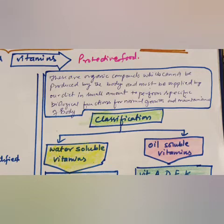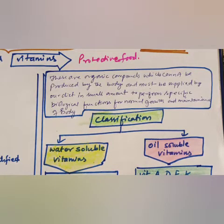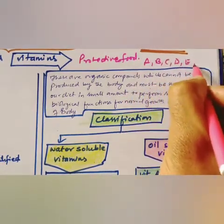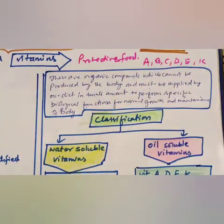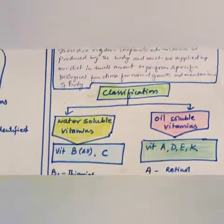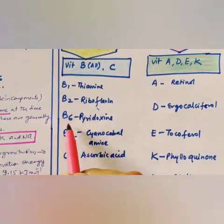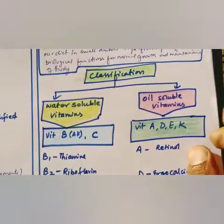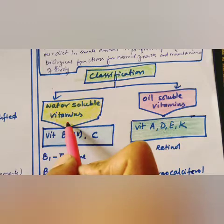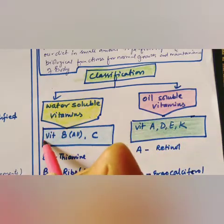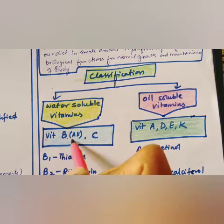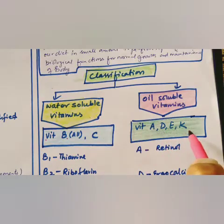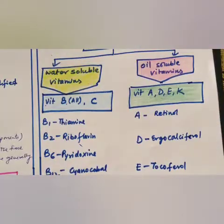Vitamins are designated by alphabets A, B, C, D, E, and K, with subgroups written as B1, B2, B6, B12, etc. Classification: water-soluble vitamins are vitamin B complex and vitamin C; oil-soluble vitamins are vitamin A, D, E, and K.